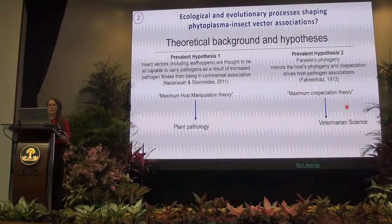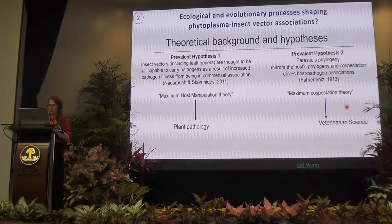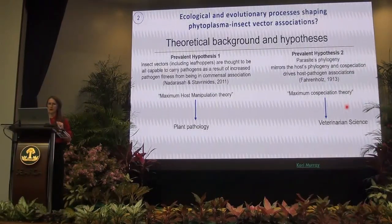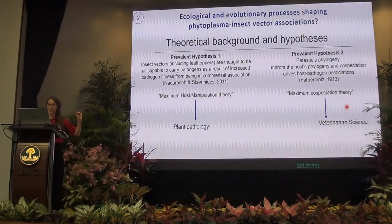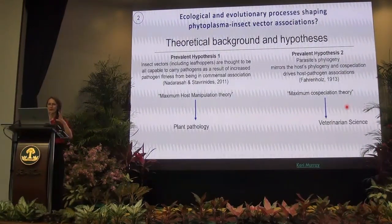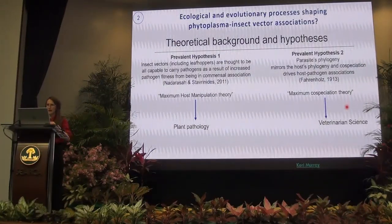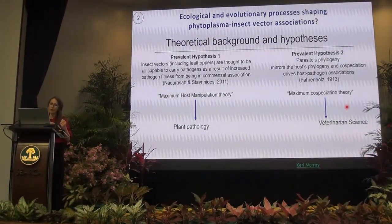I'm going to drive you through our theoretical background and how we set up our hypotheses. We start with two prevalent hypotheses in the literature. The first states that insect vectors, including leafhoppers, are thought to be capable of carrying pathogens as a result of increased pathogen fitness from being commensal — I call this the maximum host generalization theory, and it is mostly followed in the discipline of plant pathology.